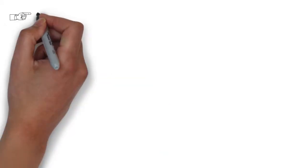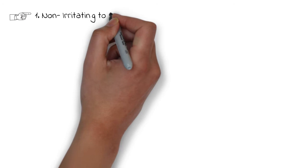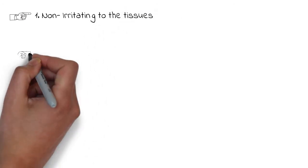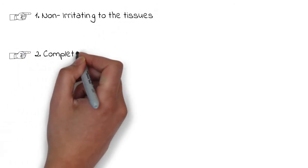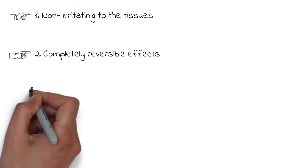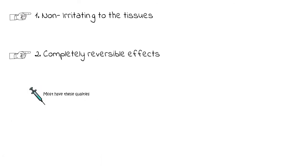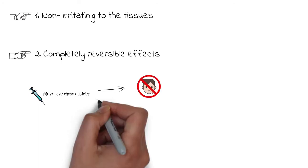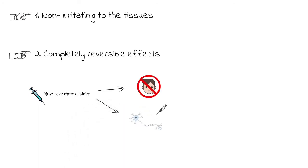First of all, the local anesthetic should not be irritating to the tissues and it should not cause any permanent alteration to the nerve, meaning its effects should be completely reversible. Most local anesthetics that are in use nowadays have both of these properties—they are usually not irritating to the tissues and are completely reversible.